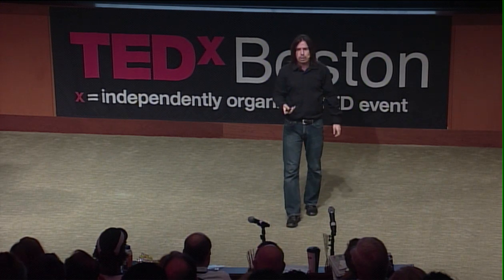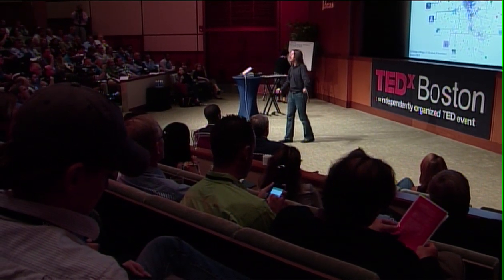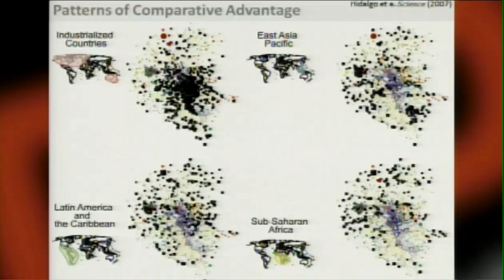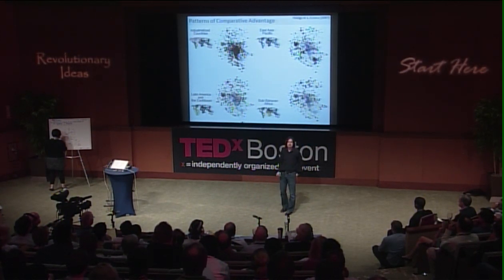Think of the product space as a forest where each node is a tree, and a country is a set of firms or monkeys living in the forest, surviving on its fruits. Black squares show products exported with comparative advantage by each region. Industrialized countries have black squares throughout the center. East Asian Pacific has monkeys in garments, textiles, electronics, and some periphery. Latin America and the Caribbean are almost exclusively on the periphery, and sub-Saharan Africa is even further out in the periphery.